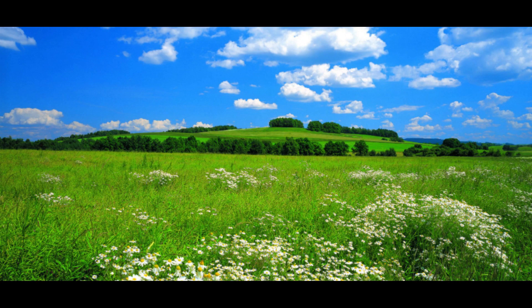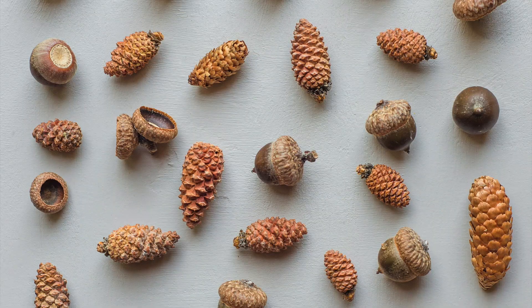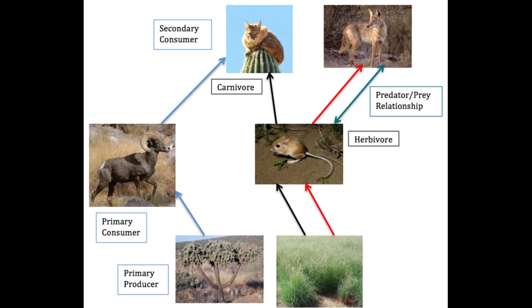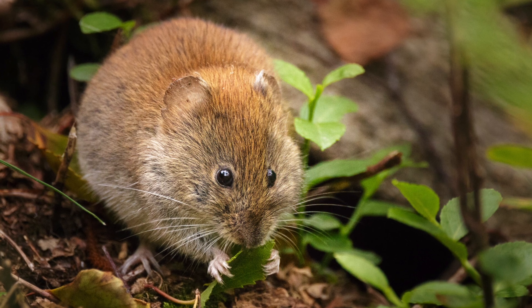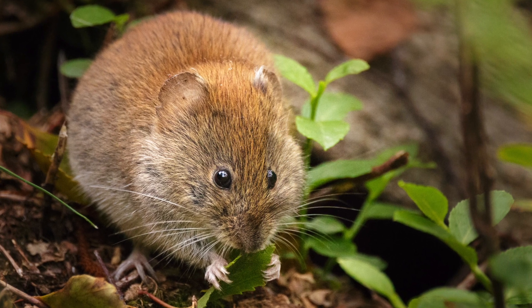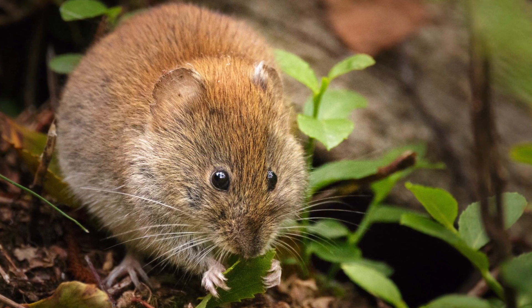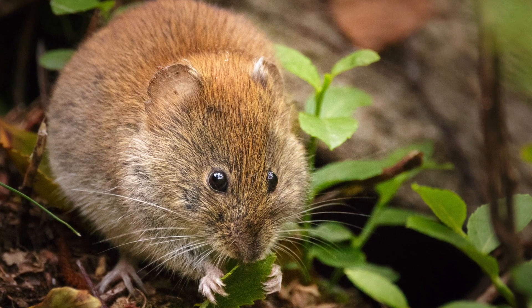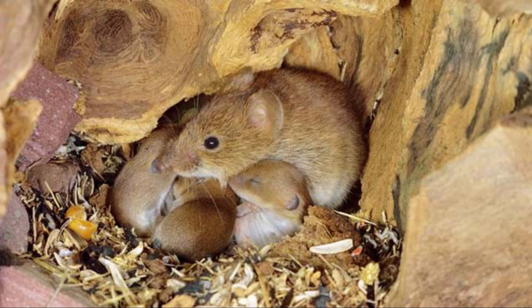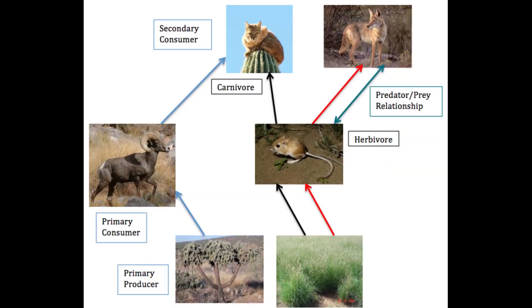An herbivore is an animal that gets its energy by eating only plants. This includes leaves, flowers, fruit, roots, and seeds. Herbivores play an important part in the web of life. Take a vole for instance — this little mouse-like rodent eats grass, roots, and seeds that it finds. The energy that is transferred from the sun is stored in the plants, allowing the vole to grow larger and reproduce, which creates more matter in their environment. But the energy doesn't stop there — this matter just happens to be an energy source for another kind of animal in the web.